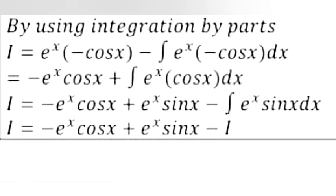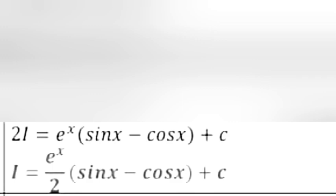Applying integration by parts again: I = -eˣ cos(x) + eˣ sin(x) - ∫eˣ sin(x) dx. So 2I = eˣ sin(x) - eˣ cos(x). Therefore I = (eˣ/2)(sin x - cos x) + c.